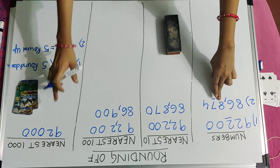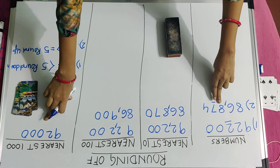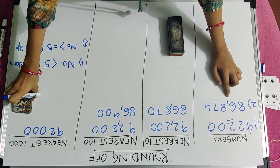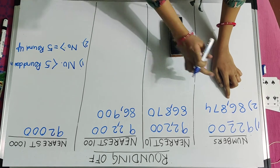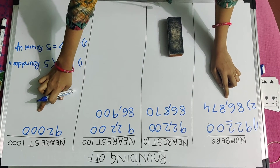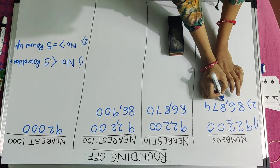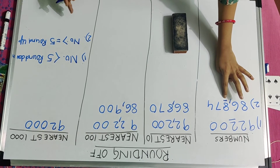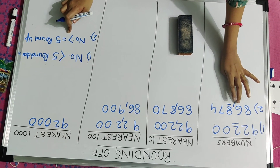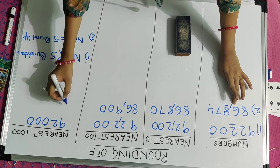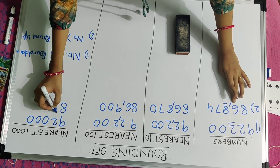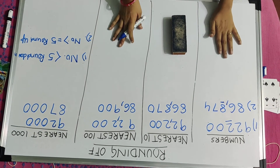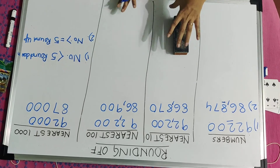My third activity is to round this number to its nearest 1,000. To round this number to its nearest 1,000, I have to check its 100's place. The number in the 100's place is greater than 5, so there will be change in its 1,000's place. So my number will be 87,000. Thank you. In this way you can do it.